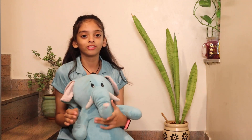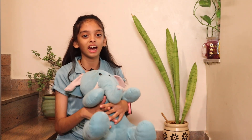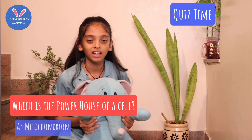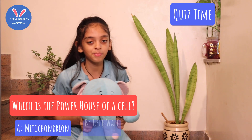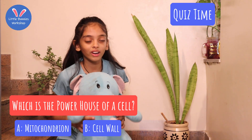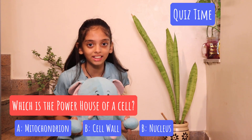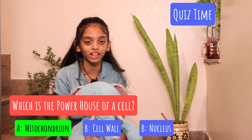Now that we've seen the differences and understood plant and animal cells, it's quiz time! Question number one: Which is the powerhouse of the cell? A. Mitochondrion, B. Cell wall, or C. Nucleus. That's right — it's the mitochondrion!